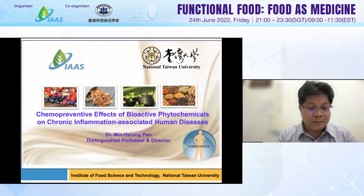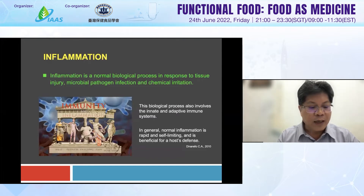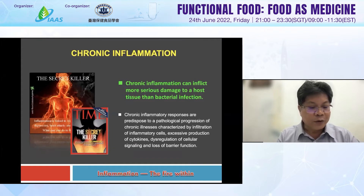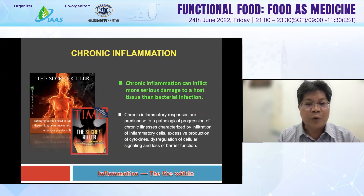In my presentation, I would like to report on the chemo-preventing effects of bioactive phytochemicals under chronic inflammation in inflammation-associated human disease. As you know, inflammation is a normal biological process in response to tissue injury, microbial infection, and chemical irritation. This slide shows you that chronic inflammation can inflict more serious damage to host tissue, such as bacterial infection. Inflammation is the fire within and the cause of human disease.